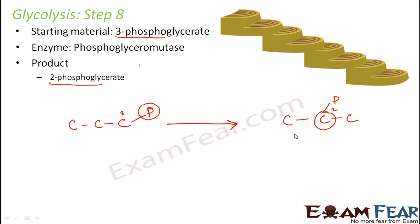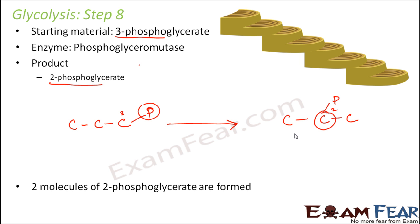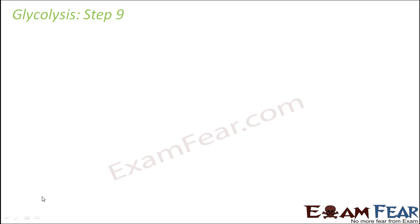Two molecules of 2-phosphoglycerate are formed. After step 5, two molecules are being formed throughout because two molecules of the starting material are present, so each step takes place twice — once for each molecule — giving two molecules of product.